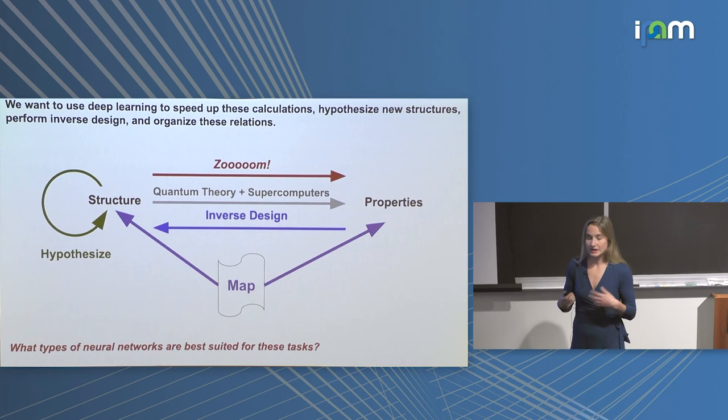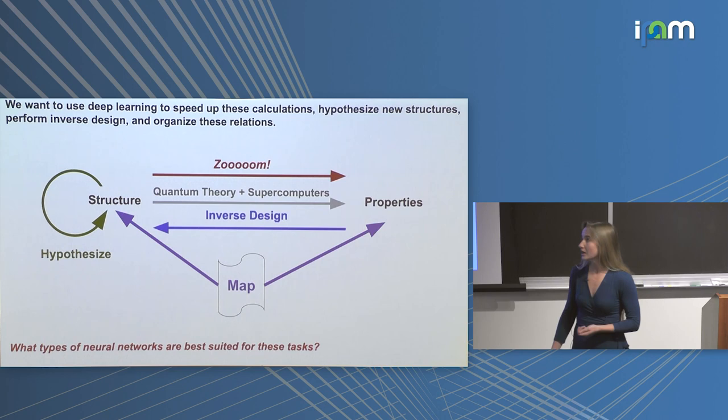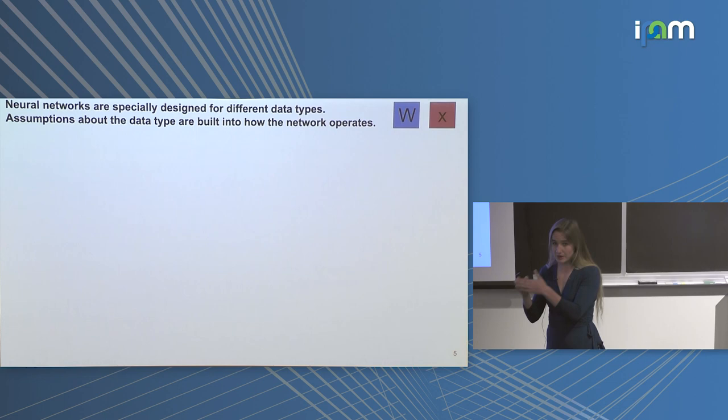If we want to use deep learning, what types of neural networks do we use? Neural networks are typically specially designed for a particular type of data. Assumptions about that data type are built into the network. I'll use W to abstractly represent weights or operations the neural network performs, and X to represent the input data.